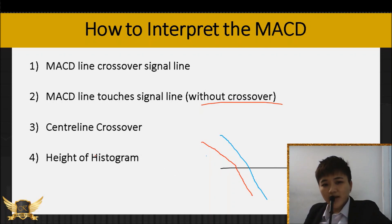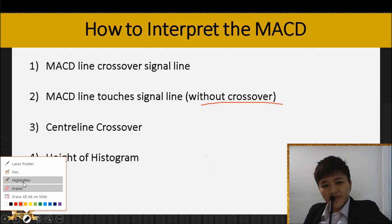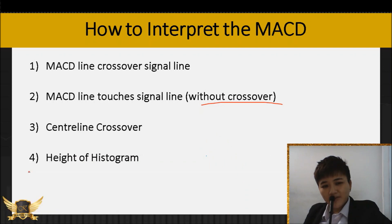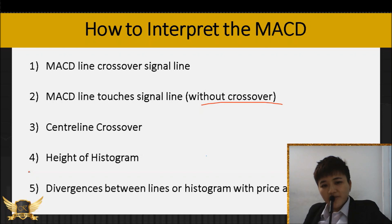The fourth way is the height of the histogram — I probably explained it already, so don't mind if I repeat it. The fifth way to interpret MACD is when there's a divergence between the line or histogram and the price action.